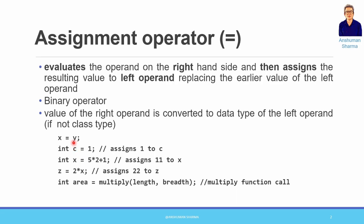For example, if we write here a data type, if we wrote a float value, it would be converted to the int type. This is very important, but it does not happen with classes because we deal with objects and data members. Otherwise, the right operand's value will be converted to match the left-hand side's data type.